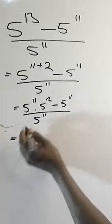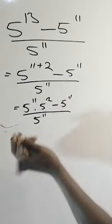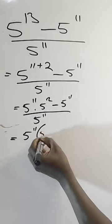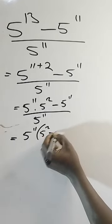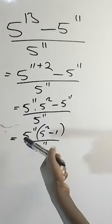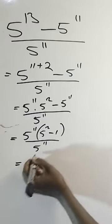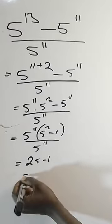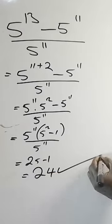I have 5 raised power of 11 common, so I'll factor it out. That gives 5 raised power of 11 times (5 squared minus 1), divided by 5 raised power of 11. The 5 raised power of 11 cancels, leaving 25 minus 1, which equals 24.